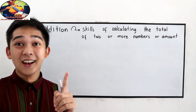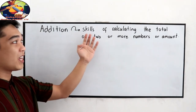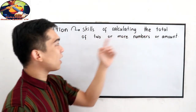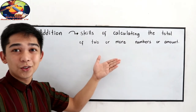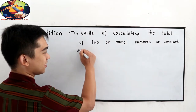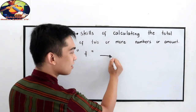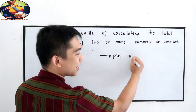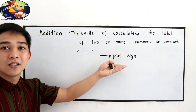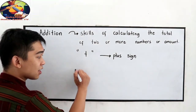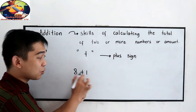First, let us define what is addition. By definition, addition is the skill of calculating the total of two or more numbers or amounts. In addition, we use this symbol — this is what we call the plus sign or symbol, also known as the addition sign. That's why if we're going to add two numbers, let's say 8 plus 1, we use the plus sign to separate the two numbers.